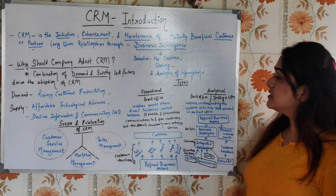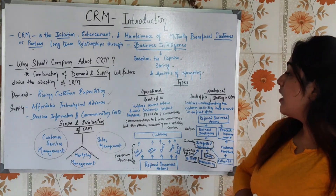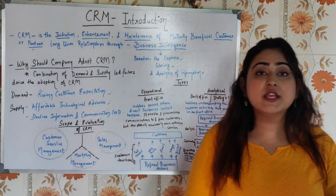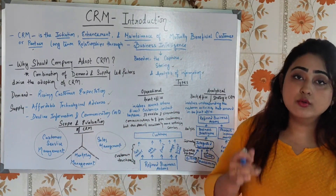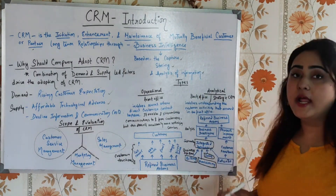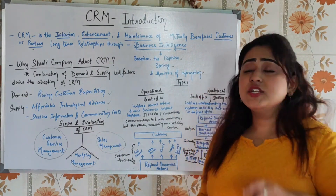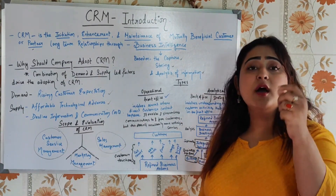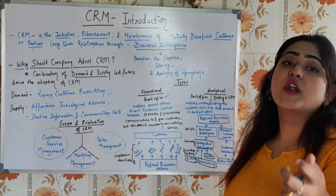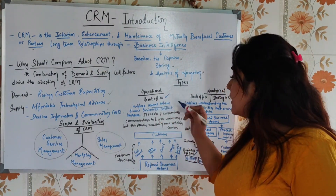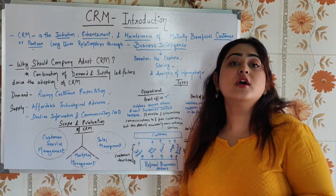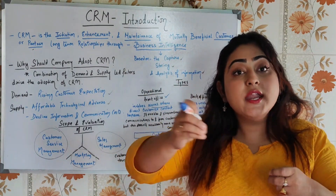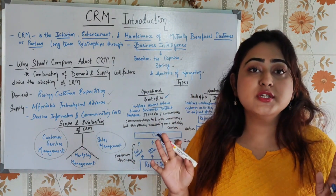Now let's look at the types of CRM. The two most important types are operational and analytical CRM. Operational CRM is also called front office CRM. This involves areas where direct customer contact occurs — meaning there is a direct interaction between the business and the customer.